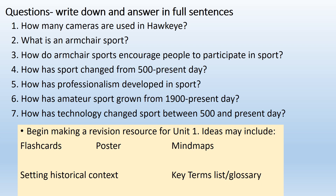Question six: how has amateur sport grown from 1900 to the present day, referring back to our reading? And question seven: how has technology changed sport between 500 AD and present day? There would be an anticipation of discussion of things such as Hawkeye, as well as professionalization in particular professional leagues that we have discussed. When you're finished with those seven questions, please move on to make a final revision resource for Unit 1 — a way to culminate all the knowledge acquired throughout this unit. You can make flashcards, a revision poster, or mind maps for each lesson. Use your lesson titles to summarize the information covered, set historical context for each era, or make a list of key terms similar to those in your summary booklets.